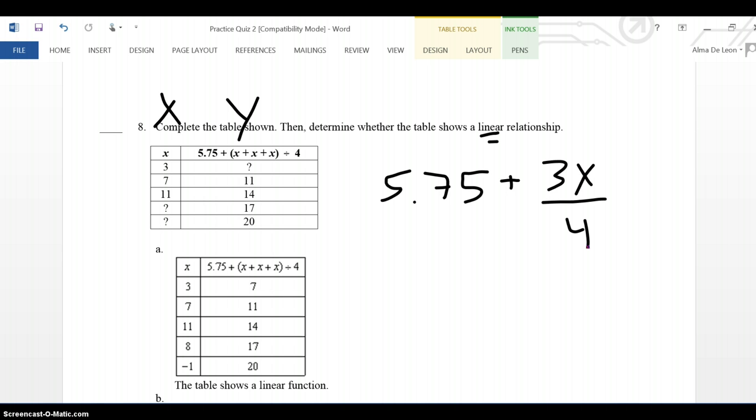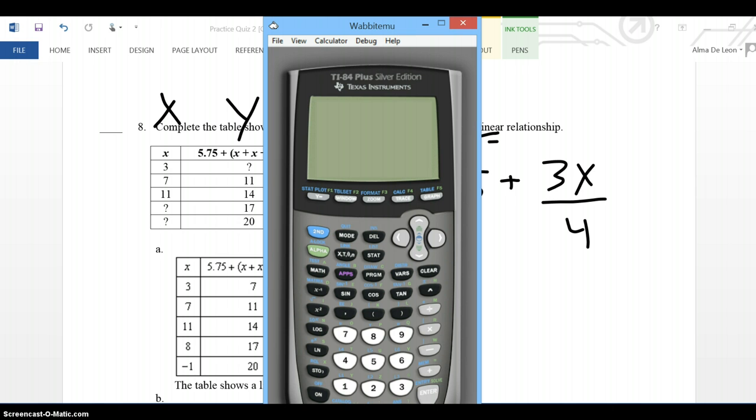I'm trying to figure out what the missing values in this table are. So I'm going to use my calculator for that. I'm going to put my equation in y equals. My equation is 5.75 plus, and I'm going to put that 3x divided by 4 in parentheses because that is a fraction.